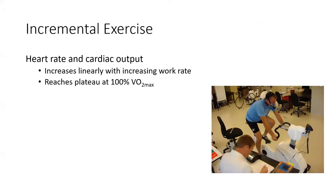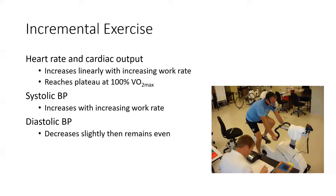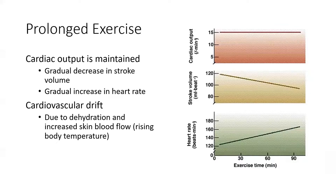During aerobic exercise, heart rate and cardiac output increase linearly with work rate, plateauing at 100% VO2 max — the maximum oxygen intake before transitioning to primarily anaerobic metabolism. Systolic blood pressure increases while diastolic blood pressure stays about the same. As stroke volume and heart rate increase, all that systolic pressure goes up.